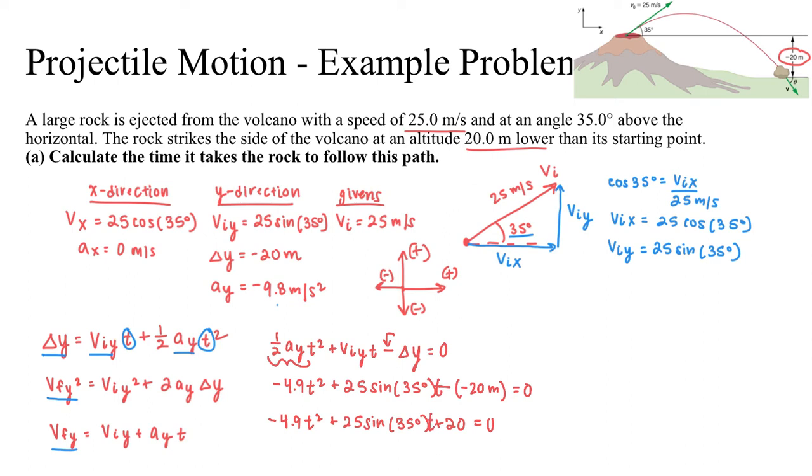So now that I have my quadratic, I know that I'm in standard form. I'm going to have to use the quadratic formula. My a is negative 4.9. My b, in this case, is 25 sine 35 degrees. And my c value is 20.